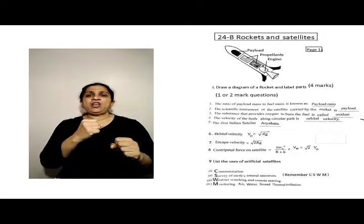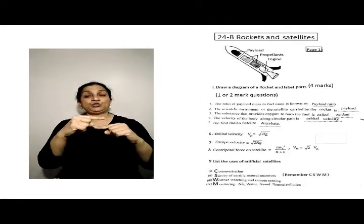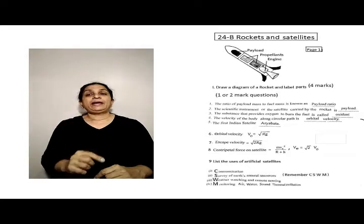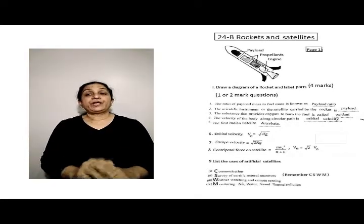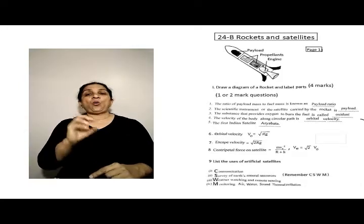Centripetal force on a satellite is equal to MV squared divided by R plus H. VE is equal to root 2 times VO.